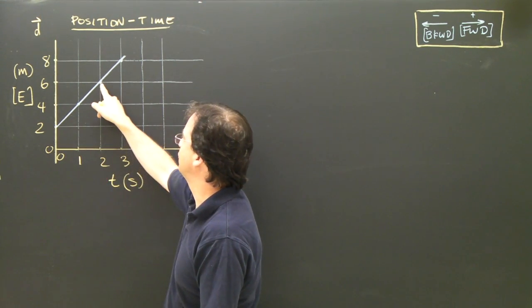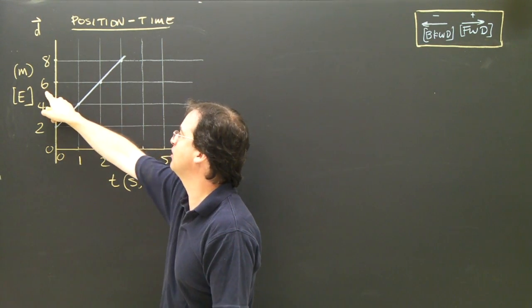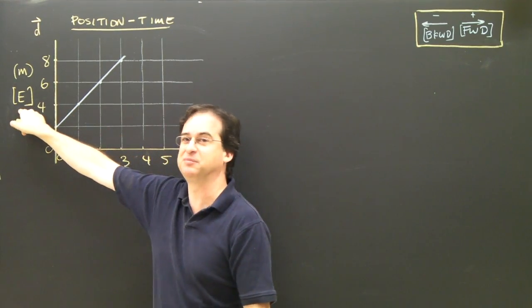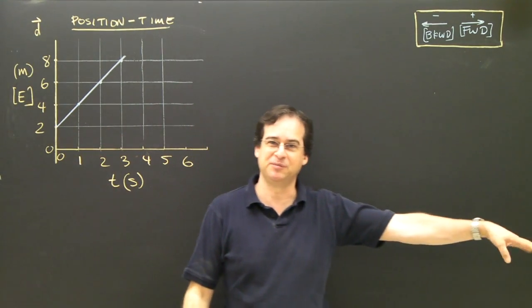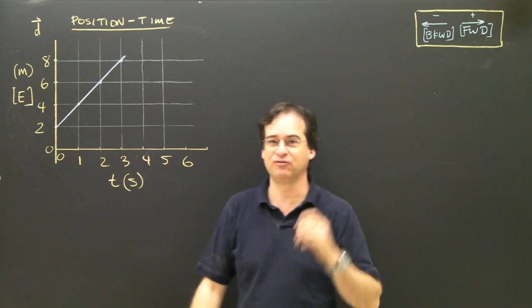And then I look at 2 seconds. At 2 seconds, I'm even further, at positive 6. Positive 6 means 6 meters east, so I'm over there at 6 meters east. Clearly, I'm moving forward in this graph.